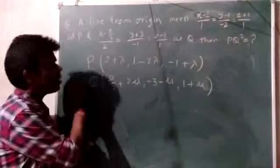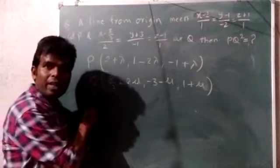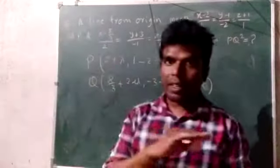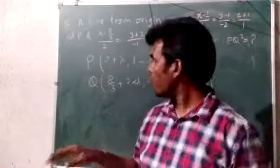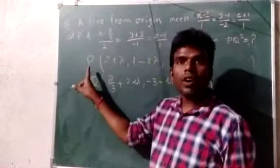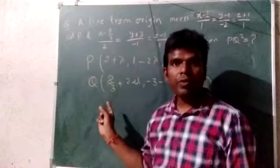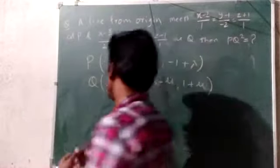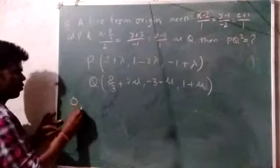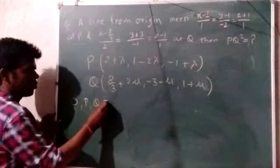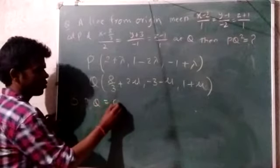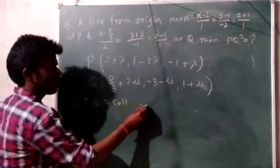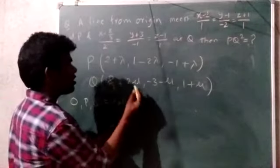Since origin, this point, and this point are lying on a line, direction ratios of OP and OQ will be same. Hence, in the k direction ratio, same.